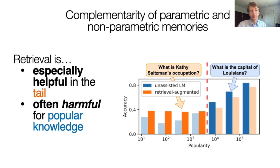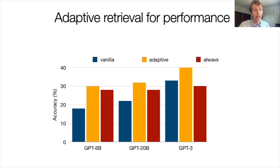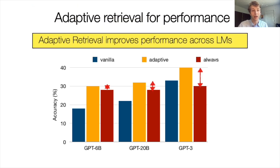Based on this, we propose adaptive retrieval. The idea naturally follows: compute a threshold subject-entity popularity, below which we will use retrieval and above which we won't. There are a few more details to the method, which I invite you to attend the talk to hear in full. This actually gives us large improvements on stronger language models, as they've already memorized a lot, so avoiding unnecessary knowledge retrieval indeed gives us benefits.